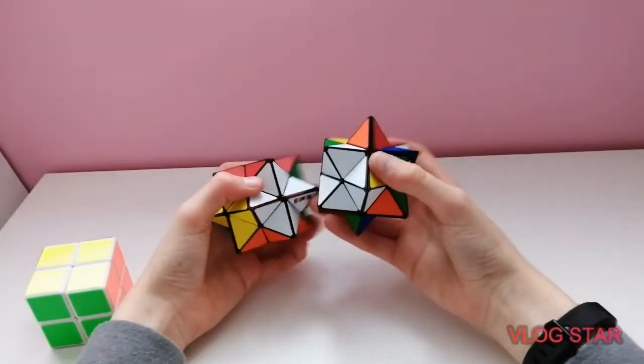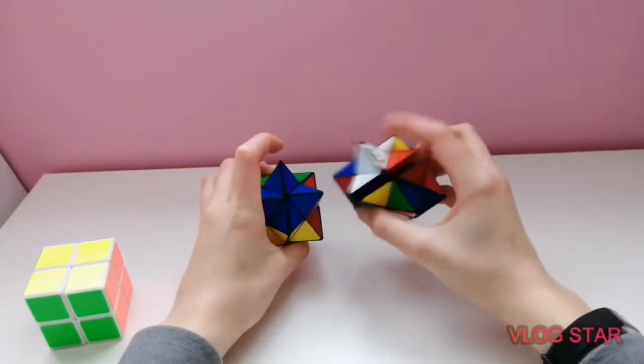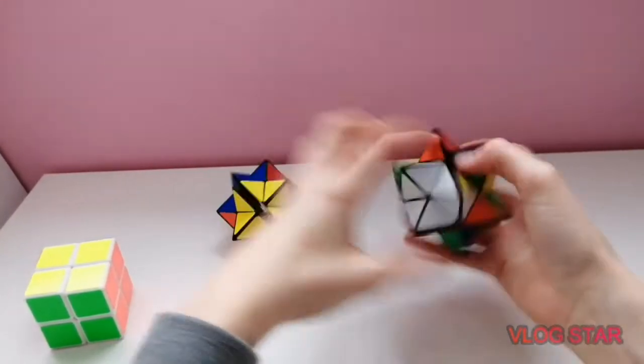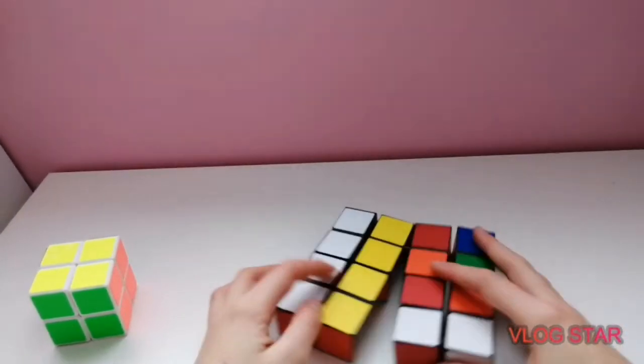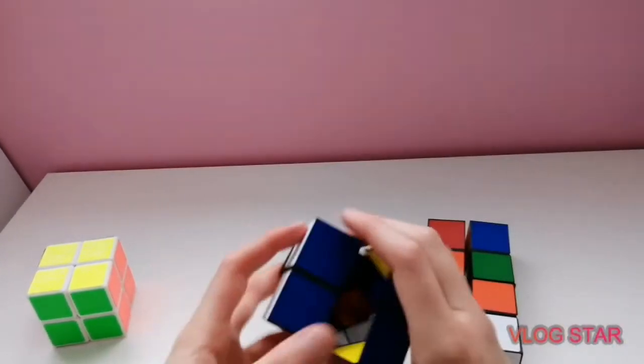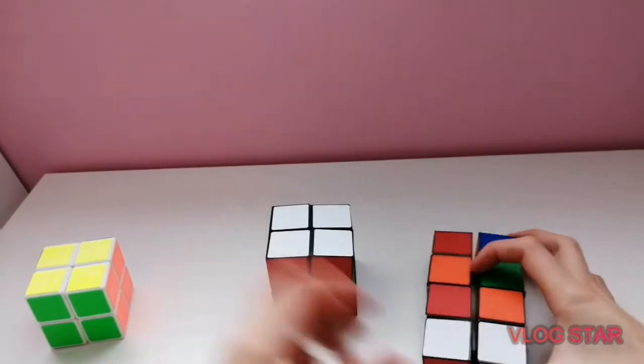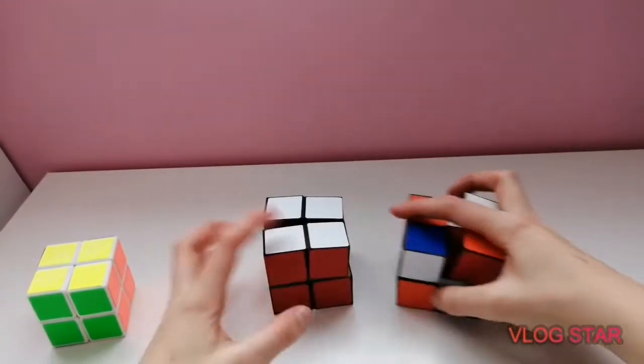This one, if you fold it out, it's scrambled. This one is kind of solved. You can have one big two by two or two hollow two by twos.